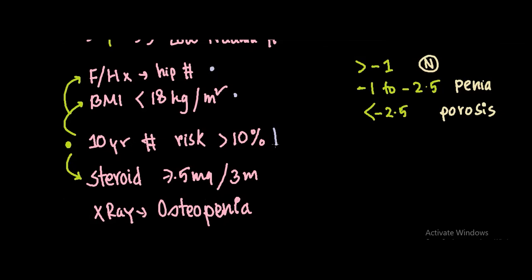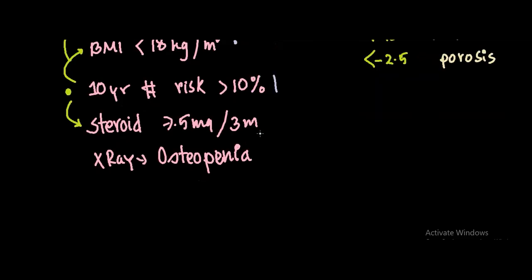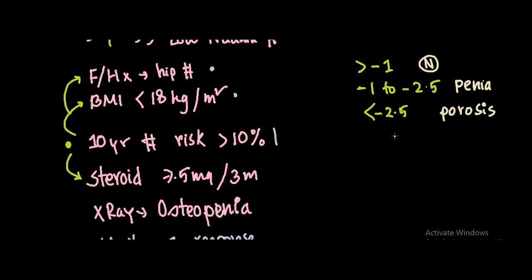If the patient is taking steroids — glucocorticoids — more than 7.5 mg for at least three months or more, a DEXA scan is needed. Also, if an X-ray taken for any other reason shows osteopenia, do a DEXA scan. Another indication is to monitor the treatment response to osteoporosis; in such cases, a BMD scan is done every two to three years.